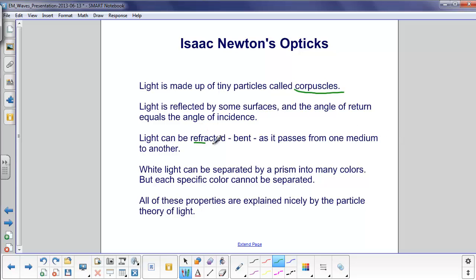Light can also be refracted, which is just a fancy word for bent, as it passes from one medium to another. White light can be separated by a prism into many colors, but each specific color cannot be separated. All of these properties are explained nicely by the particle theory of light.